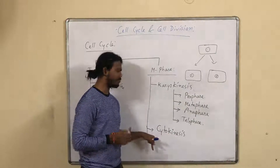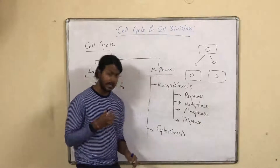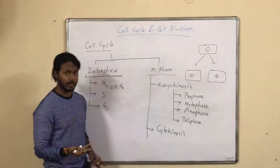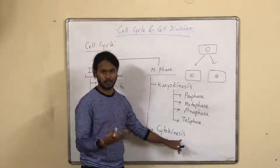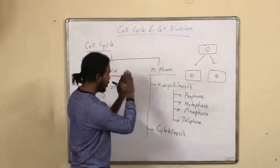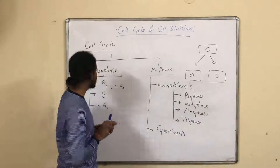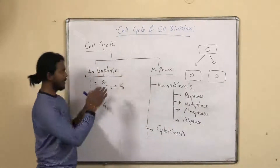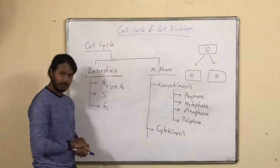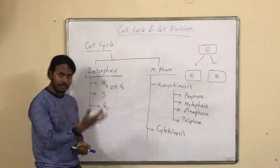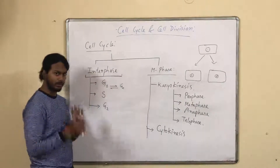Cytokinesis involves the division of the cytoplasm. In plant cells it is called the cell plate method. Each type will be discussed. So this is an overall concept regarding the cell cycle — more details will come in the next video.